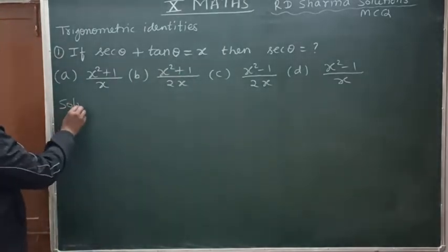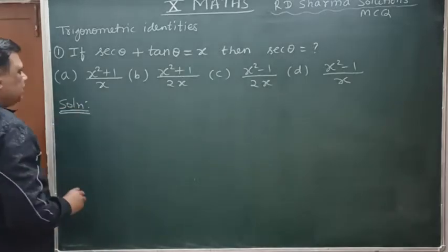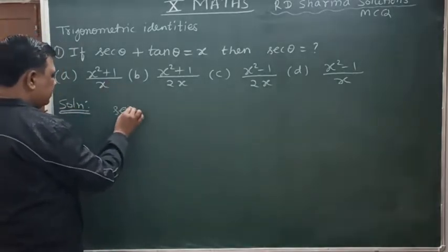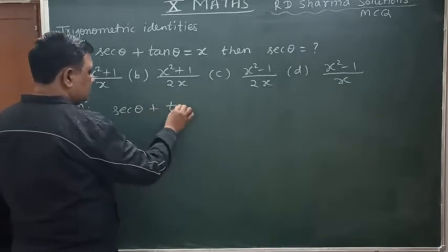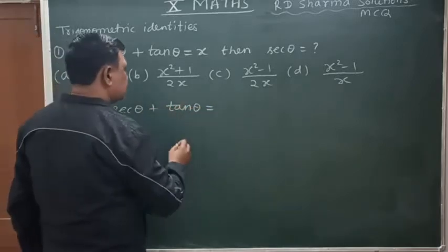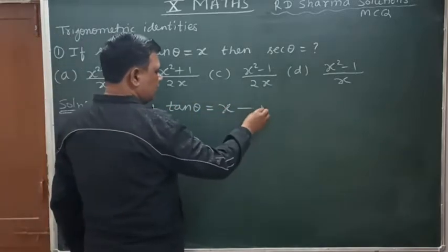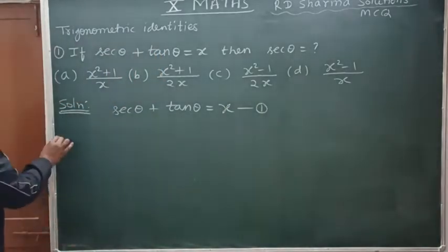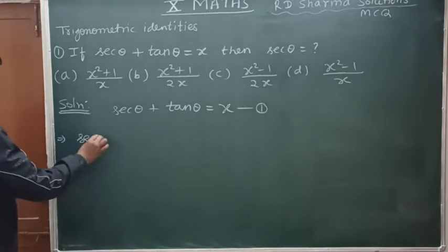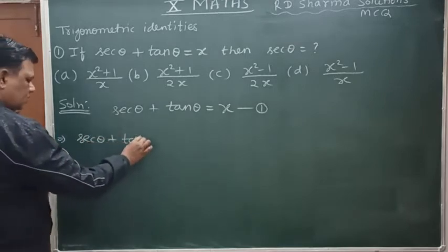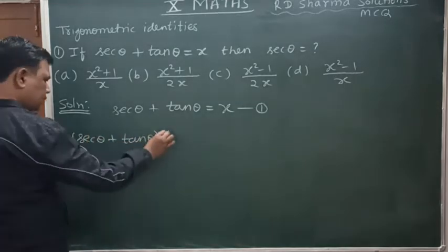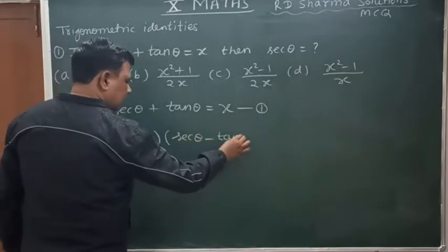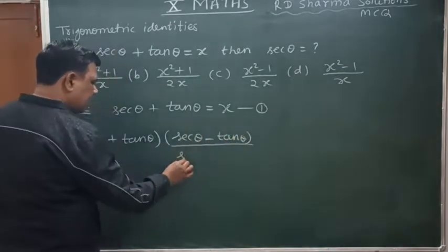Now we have to solve how to find the value of sec θ given this. We write sec θ plus tan θ equals x. You see, it comes to: sec θ plus tan θ, multiplied and divided by sec θ minus tan θ.